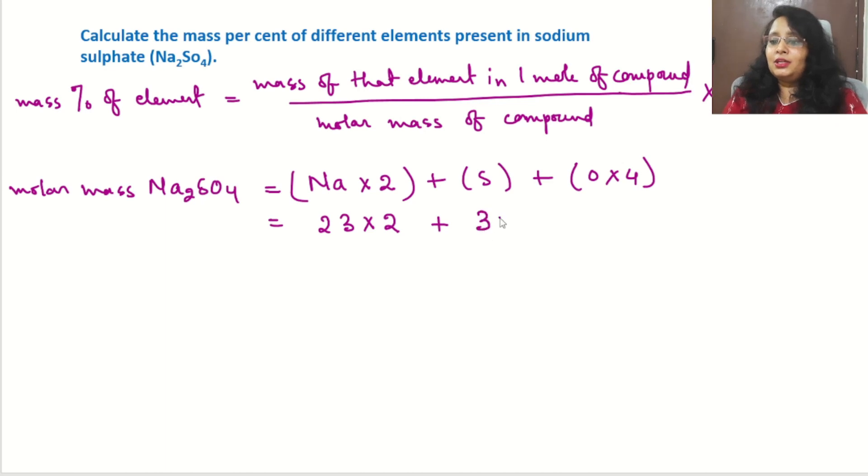And we will get the answer: 46 plus 32 plus 64, and in total it will come to 142, and the unit will be grams per mole.